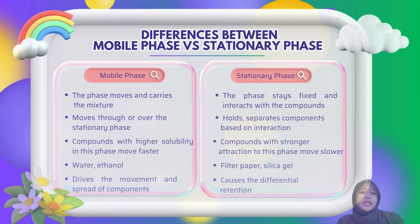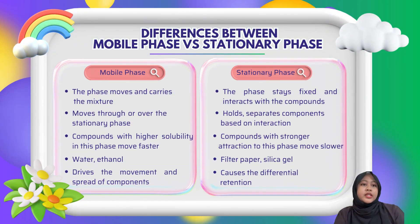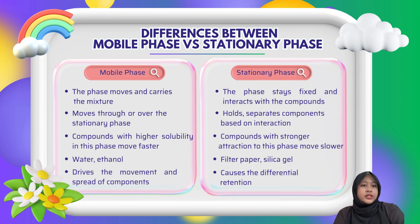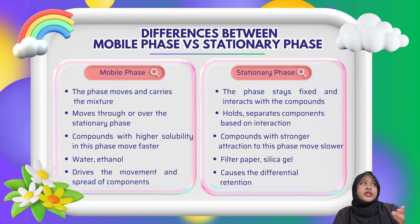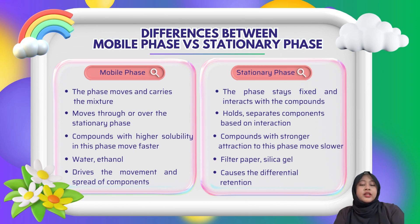Now I will explain the difference between the mobile phase and stationary phase in chromatography. Basically, the mobile phase is the part that moves, which carries the substance we want to separate through the system — for example, water or alcohol acting as a solvent. Substances that dissolve well in it will travel faster. Meanwhile, the stationary phase stays in place — it can be something like filter paper or silica gel, which helps separate substances based on how strongly they stick to it. The stronger the attraction, the slower they move.